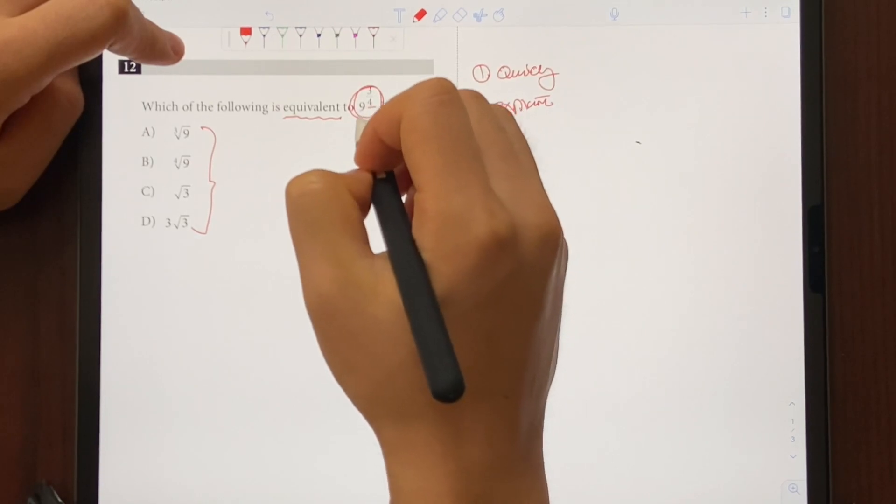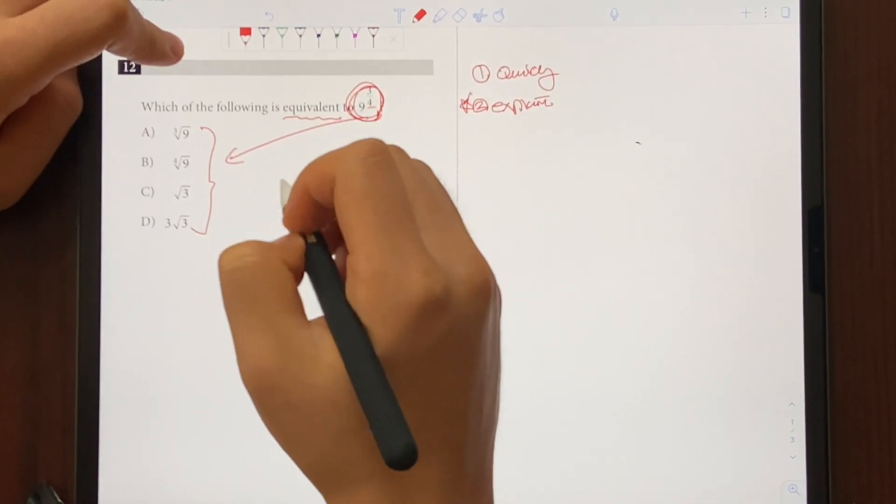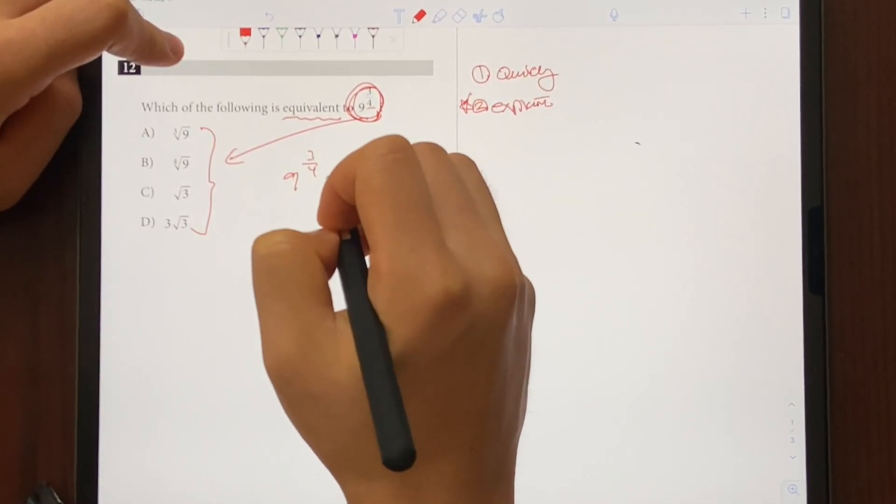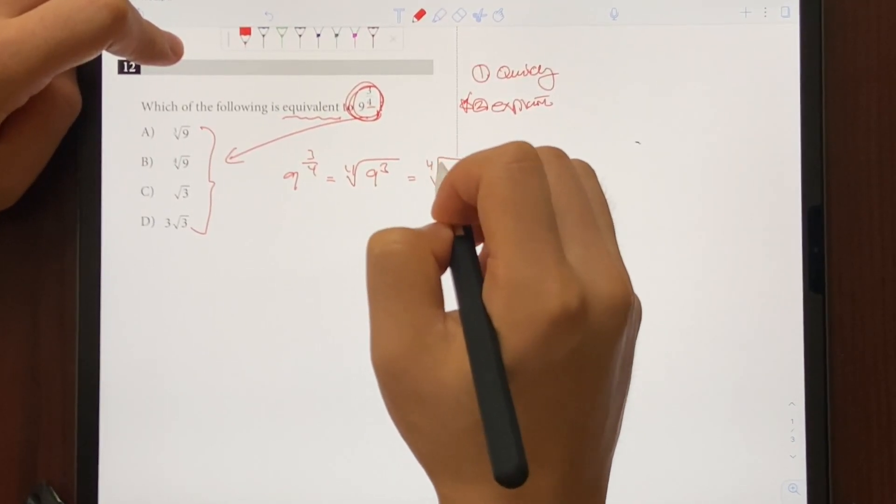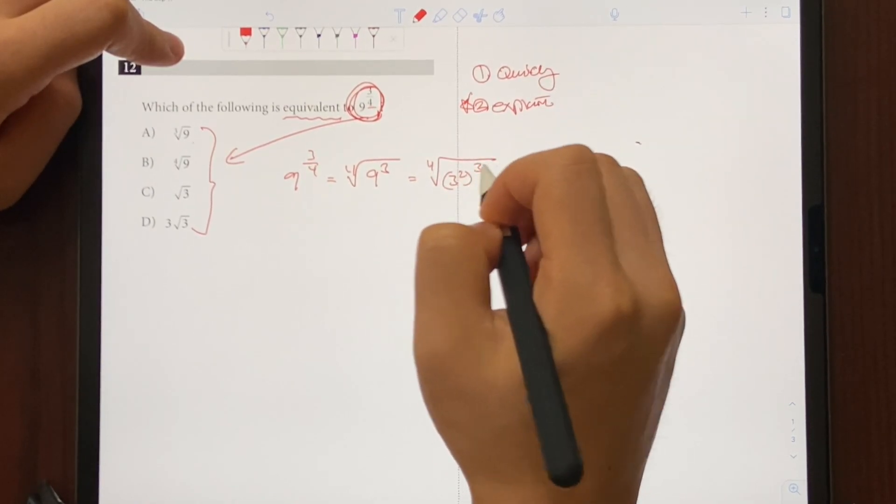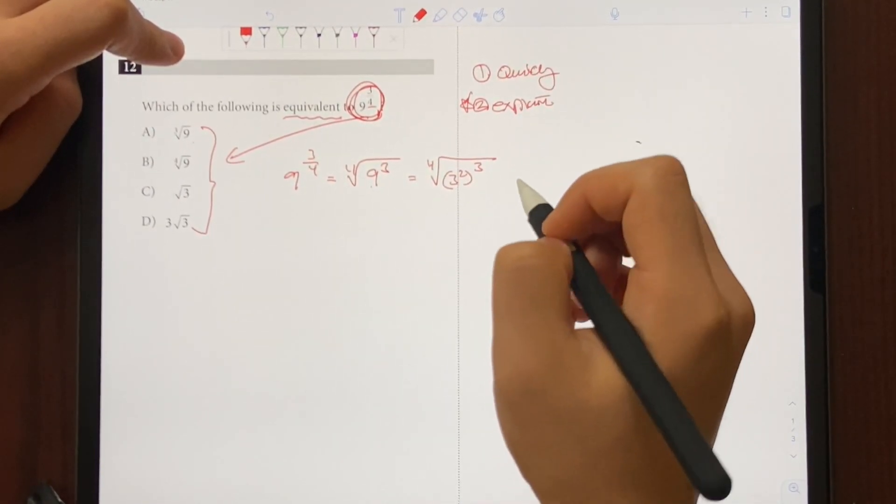The first thing we're going to do is we're going to convert exponents back into the radical form. So 9 to the power of 3 over 4 is the same thing as quad root of 9 to the third power. And this can also be written as quad root of 3 to the second power to the third power, 9 and 3 to the second, same thing, right?